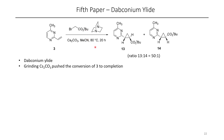They were able to form the desired trans product over the cis product with 50-to-1 selectivity — that means it was about 98% compound 13, 2% compound 14. Initially they weren't able to get this to go to full conversion, but they found that if they ground the cesium carbonate, they were able to push the reaction to full conversion.